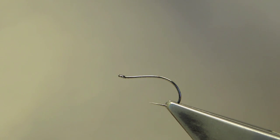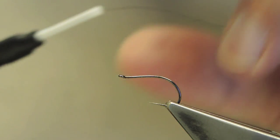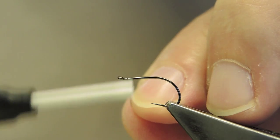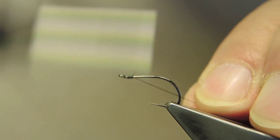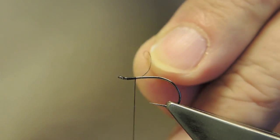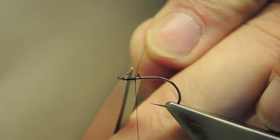The hook is a Grip 14723BL size 12. The thread is Benecki 12-0 in black, attached just back of the eye, run down a few turns, then trim away the waste.